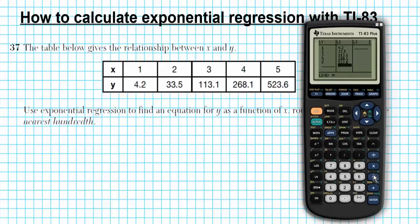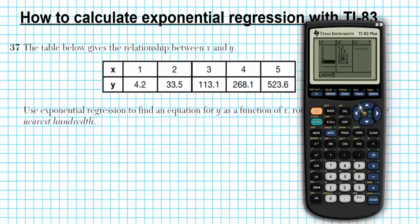Now, anytime you enter data into a calculator, you always want to go back and check to make sure that you entered everything correctly. So let's go over our Y entry, which is List 2. We have 4.2, 33.5, 113.1, 268.1, 523.6 — perfect. And then we just have 1, 2, 3, 4, 5 in L1. So now we have that done.